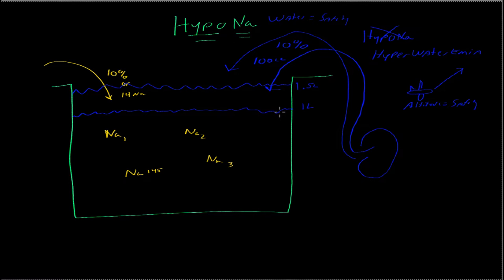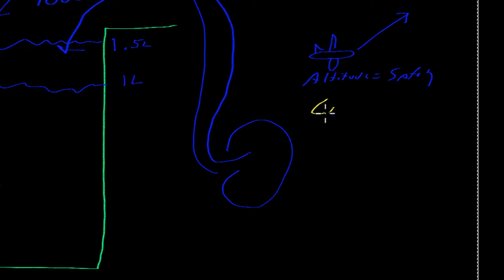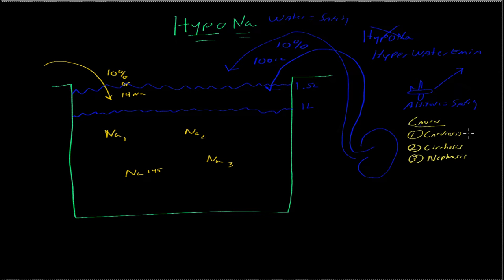So almost all hyponatremic cases are where the brain got confused and started to hold on to water. The first three common causes, if you know just these three causes, you probably have 80% of them. And I'm going to make these terms up. But it's cardiosis, cirrhosis, and nephrosis. The osises. Osis is Latin for condition. So it's a cardiac condition, a liver condition, or a kidney condition. And really, it's kind of all the same thing.